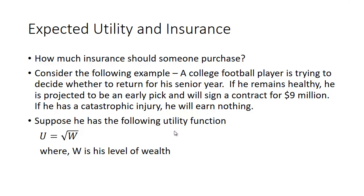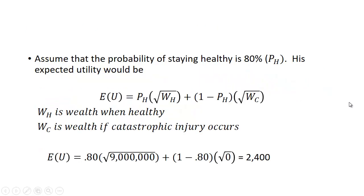Let's assume he has the following utility function: utility equals the square root of W, where W is his level of wealth. Assume the probability of staying healthy is 80%, which we'll call pH. His expected utility is the average of the utility he gets from being healthy and from having the catastrophic injury: pH times the square root of his healthy wealth plus (1 minus pH) times the square root of zero. Working this out: 0.8 times the square root of 9 million plus 0.2 times the square root of 0, which equals 2,400 units — sometimes called utils.